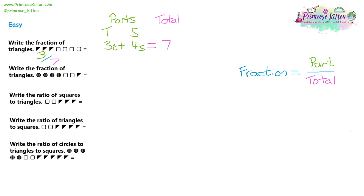Let's try the same thing for question two. Identify what you have: four circles, two squares, and one triangle. The total is four plus two plus one, which is seven. We want to write the fraction of triangles — part over total — so one triangle over seven. One out of the seven symbols are triangles.